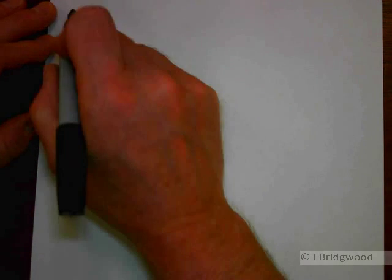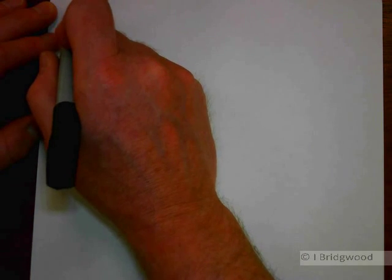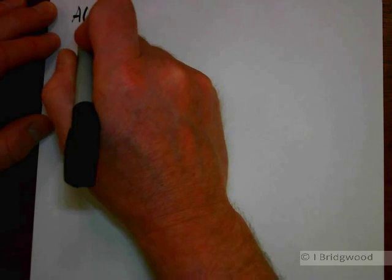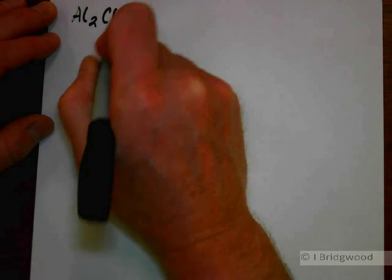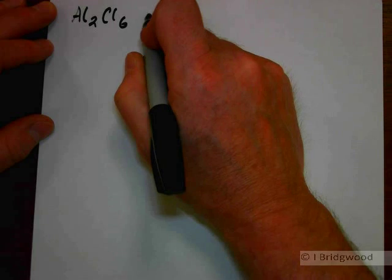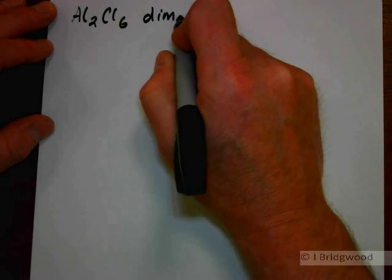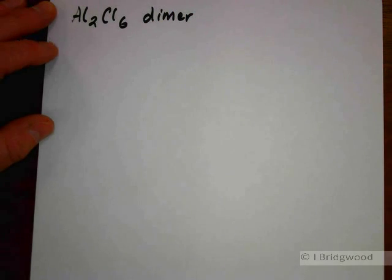When you heat aluminium chloride up very gently, it will sublime. It turns into a vapor, and the vapor is molecular in form. Just above its sublimation temperature, aluminium chloride, AlCl3, actually exists as Al2Cl6, as a dimer. At higher temperatures it won't, but just above its sublimation temperature it does.